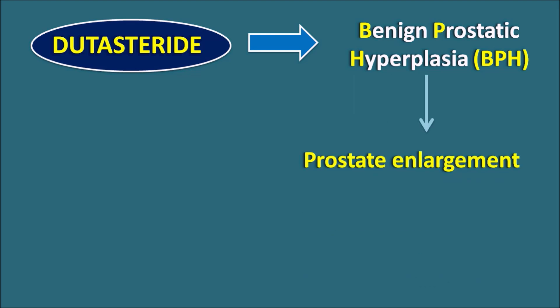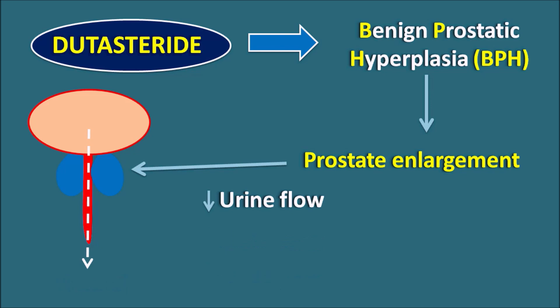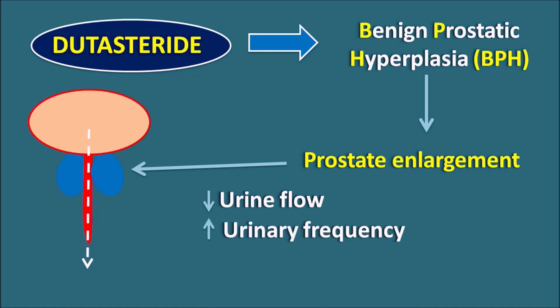Under normal size of the prostate gland, the urinary flow is normal through the urethra. But when the prostate gland is enlarged, it results in constriction of the urethra, which results in decreased urinary flow. Prostate enlargement may result in decreased urinary flow as well as increased urinary frequency.